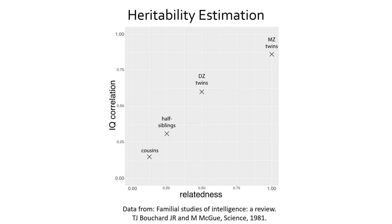Given gene-environment correlation, this helps us understand different methods of estimating heritability. One key property of certain kinds of gene-environment correlation, such as indirect genetic effects, is that they lead to a general increase in environmental similarity with genetic relatedness. As people become more related, their parents become more related, so their indirect genetic effects become more similar. Simply seeing phenotypic correlation increasing with genetic similarity is not evidence for direct genetic effects on its own — it can also reflect indirect genetic effects or other environmental phenomena that become more similar as people become more related.